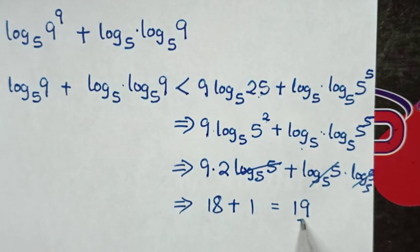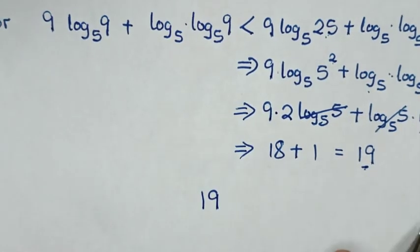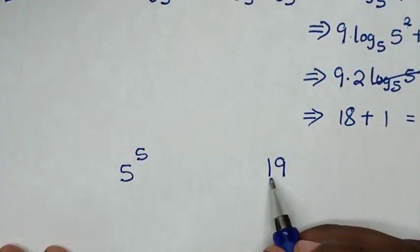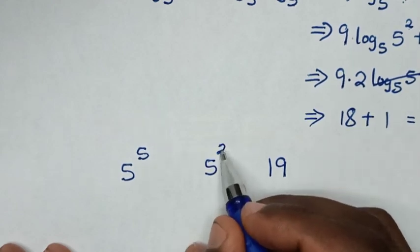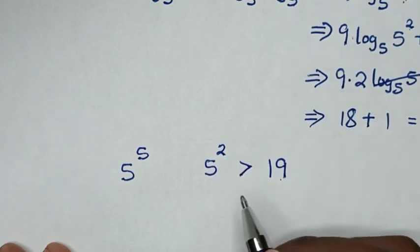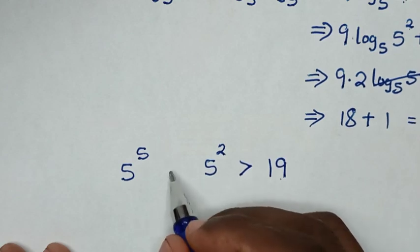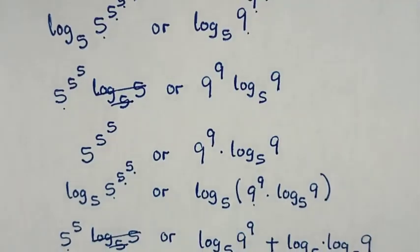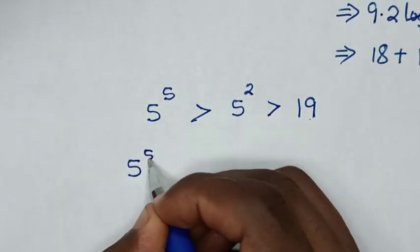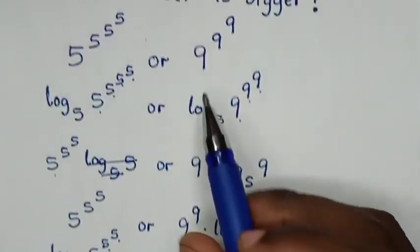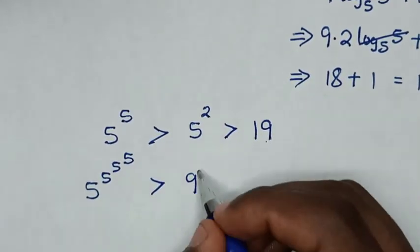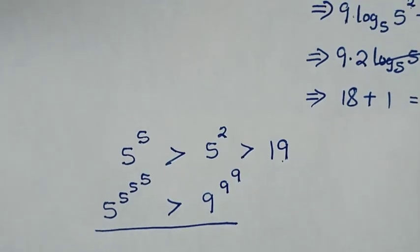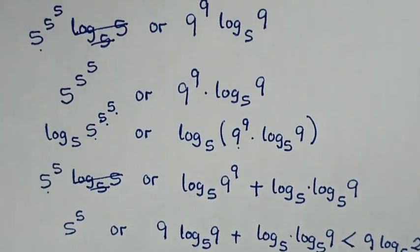Therefore this side is less than 19. We rewrite 19 and compare: 19 is less than 5 power 2 which is 25, and 5 power 5 is obviously greater than 5 power 2. So 5 power 5 power 5 power 5 is greater than 9 power 9 power 9. That is our final answer. Thank you — don't forget to subscribe to my channel, and see you in the next video, bye bye!